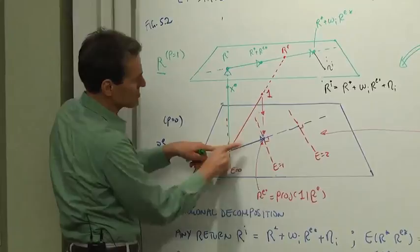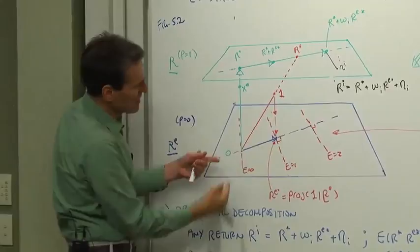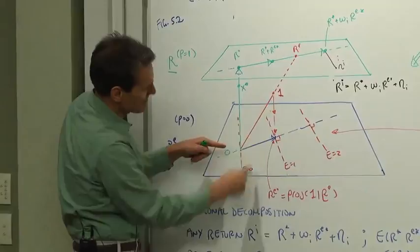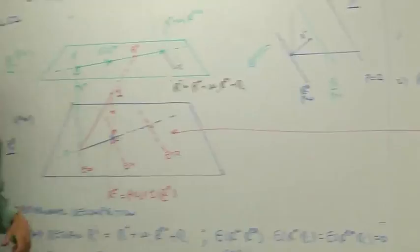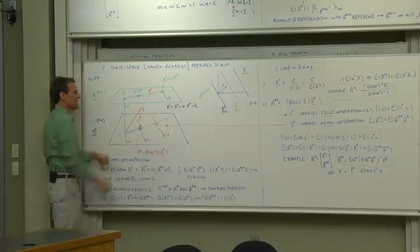So here's our ingredients. We have r star and we have r e star. R star generates prices. R e star generates means in the same way. The hyperplanes orthogonal to r e star have the same mean in the same way that the hyperplanes orthogonal to x star have the same prices. So that's the point of r e star. It generates changes in means among the excess returns.